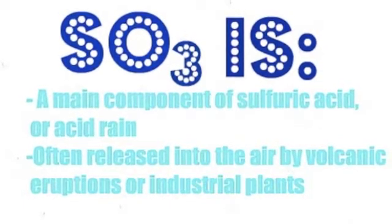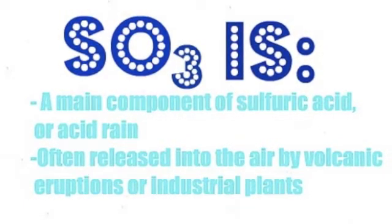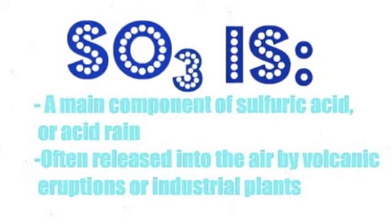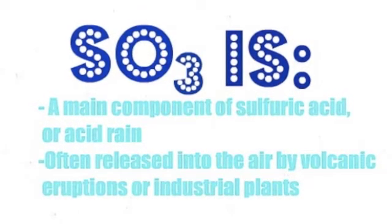Sulfur trioxide is a main component of sulfuric acid, or acid rain. It is often released into the air by volcanic eruptions or industrial plants.